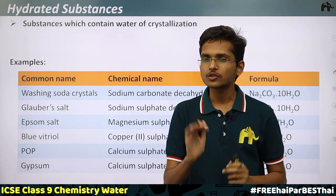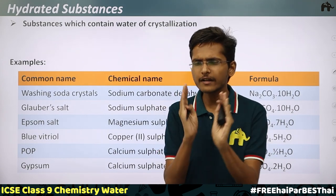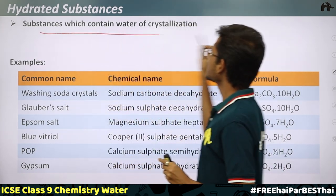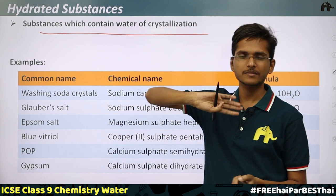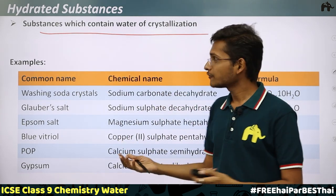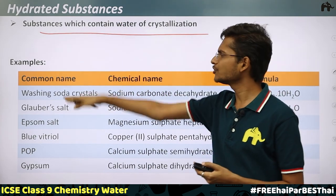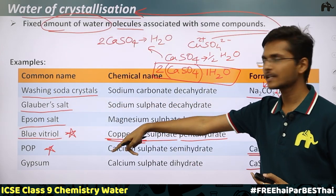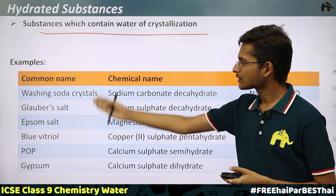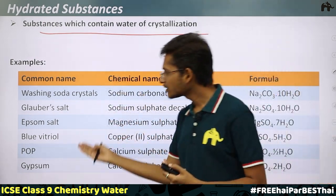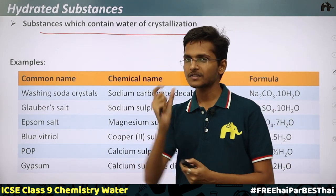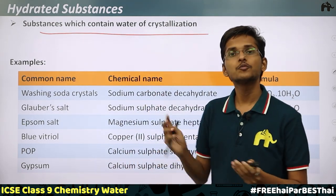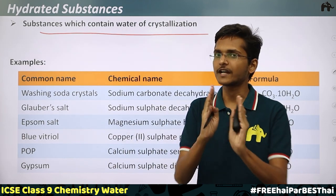Now it is easy to understand hydrated substances — they are simply those substances which have water of crystallization. Substances which contain water of crystallization are hydrated substances. All the examples we have seen — washing soda crystals, Glauber salt, Epsom salt, blue vitriol, POP, gypsum — are all hydrated substances. If you find any substance in your book which has water of crystallization, it is a hydrated substance.